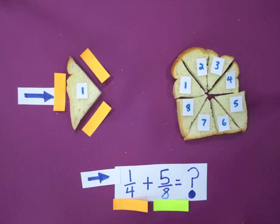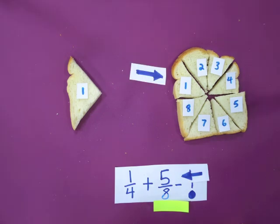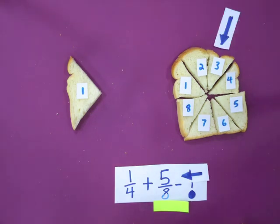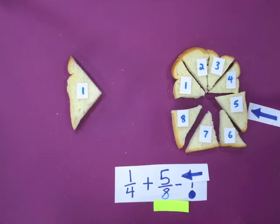The fraction on the right, five eighths, has a numerator of five and a denominator of eight. So that means we're going to choose five slices out of the eight.